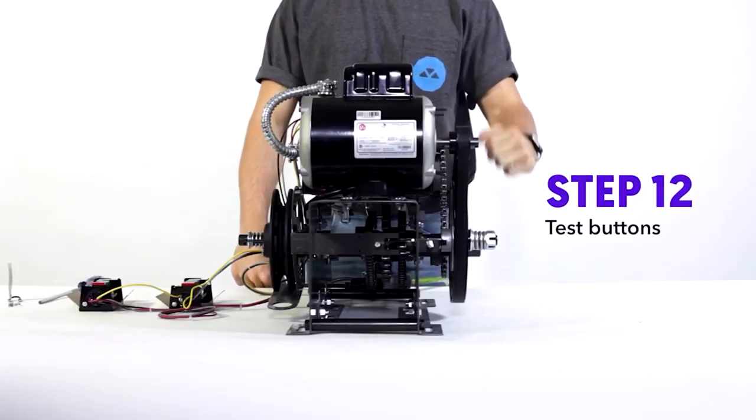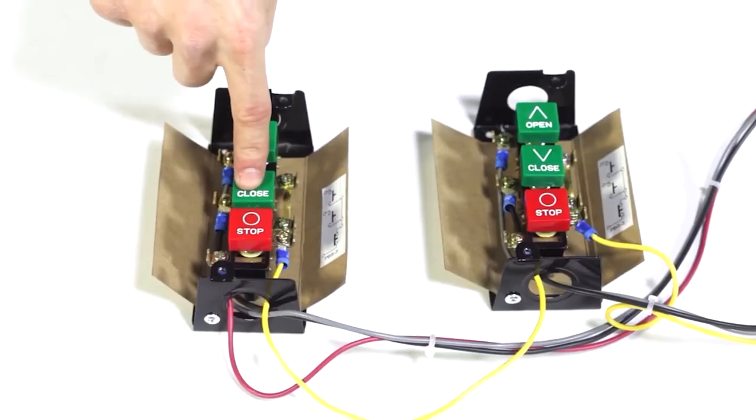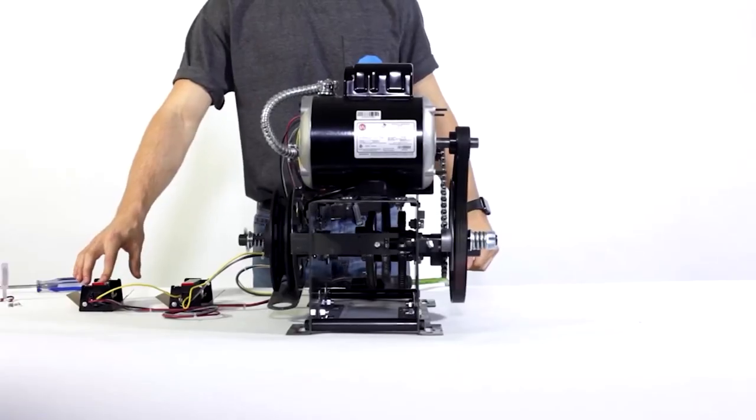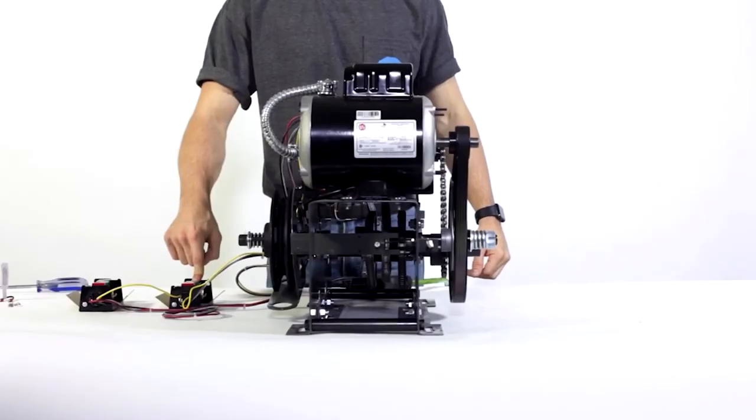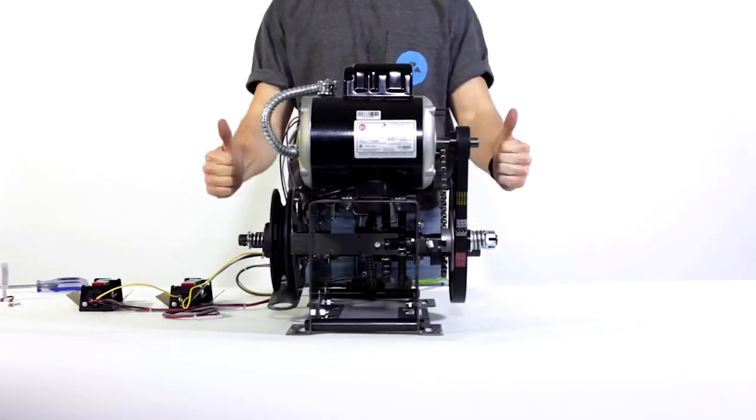Step twelve, test your buttons in any kind of sequence that you want. Close, stop, open, stop, whatever. If it works, then we have a double thumbs up.